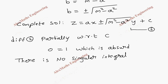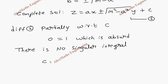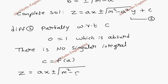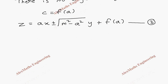Now we take the constant c as a function of a. So z becomes: z = ax ± √(m² - a²)·y + f(a). We take this as the third expression, and we are going to differentiate this third expression partially with respect to a.